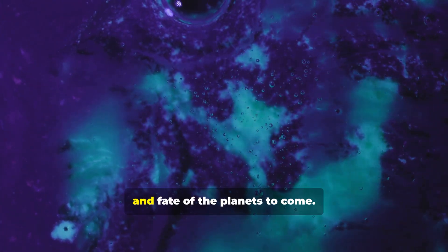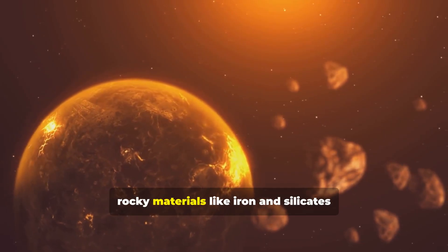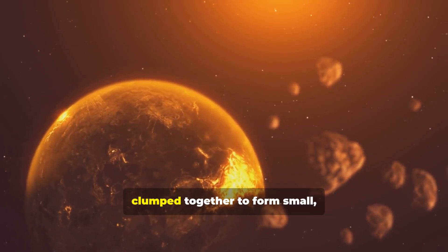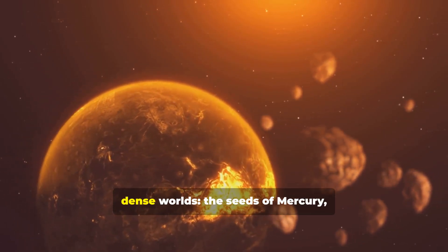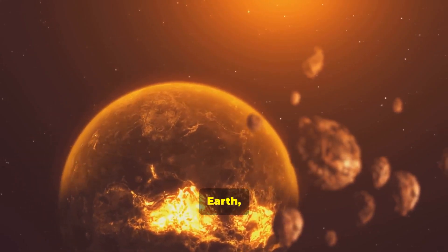The size, composition and fate of the planets to come. Closer in, rocky materials like iron and silicates clumped together to form small, dense worlds. The seeds of Mercury, Venus, Earth and Mars.